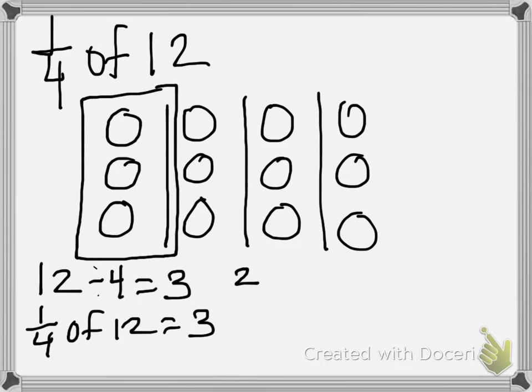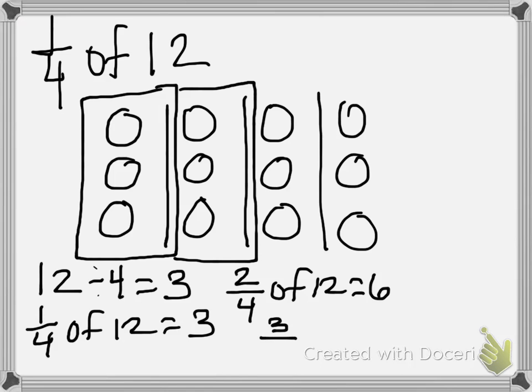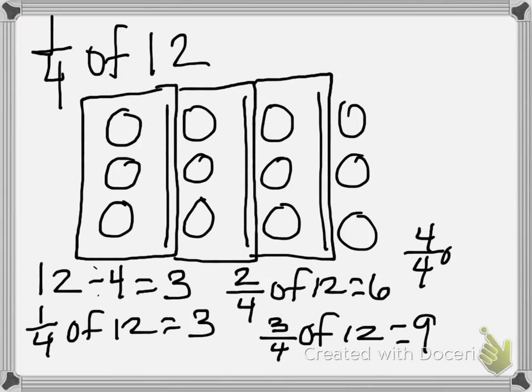If we had 2 groups, or 2/4 of 12, we would have 6 counters. If we wanted 3/4 of 12, we would have 9 counters. And 4/4 of 12 would give us 12 counters.